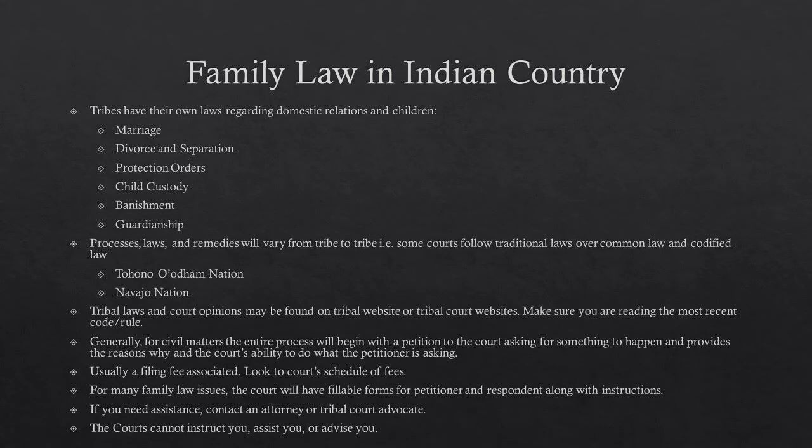Next, family law issues in Indian Country — this is another huge area of law. Tribes have their own laws regarding domestic relations and how they handle children and custody of children. Examples of laws governing domestic relationships and children include: marriage, divorce and separation, protection orders, child custody orders, banishment, guardianship, and the list goes on. The processes, laws, and remedies are going to vary from tribe to tribe based on what the tribe has adopted or not. Sometimes the tribe will follow traditional laws over any kind of common law or codified law.